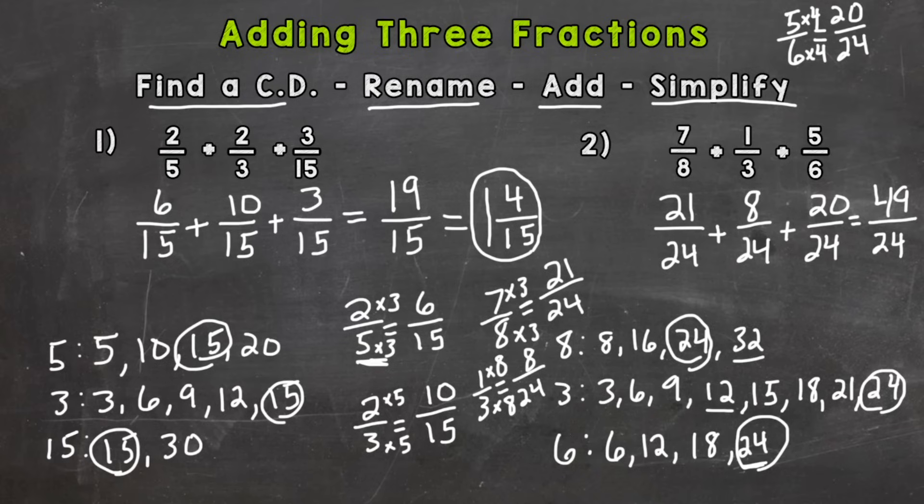Now just like number 1 we got an answer that's over 1 whole. We got an improper fraction. So we need to convert it to a mixed number or simplify it to a mixed number. So I'll put my equal sign here. So we need to see how many 24ths can be pulled out of 49. We need to divide 49 by 24. And the answer to that is 2. 2 whole.